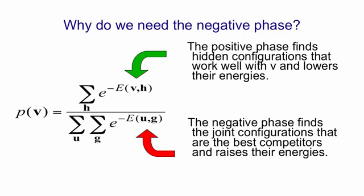The second phase in the learning, the negative phase, is doing the same thing but for the partition function, that is, the normalizing term on the bottom line. It's finding global configurations, combinations of visible and hidden states that give low energy and therefore are large contributors to the partition function. And having found those global configurations, it tries to raise their energy so that they contribute less. So the first term is making the top line big and the second term is making the bottom line small.